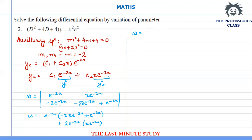Solving the determinant, I get e^(-2x)·(x·e^(-2x) + e^(-2x)) + 2e^(-2x)·x·e^(-2x). Opening the brackets: -2x·e^(-4x) + e^(-4x) + 2x·e^(-4x). The -2x and +2x terms cancel, leaving the final value of W as e^(-4x).